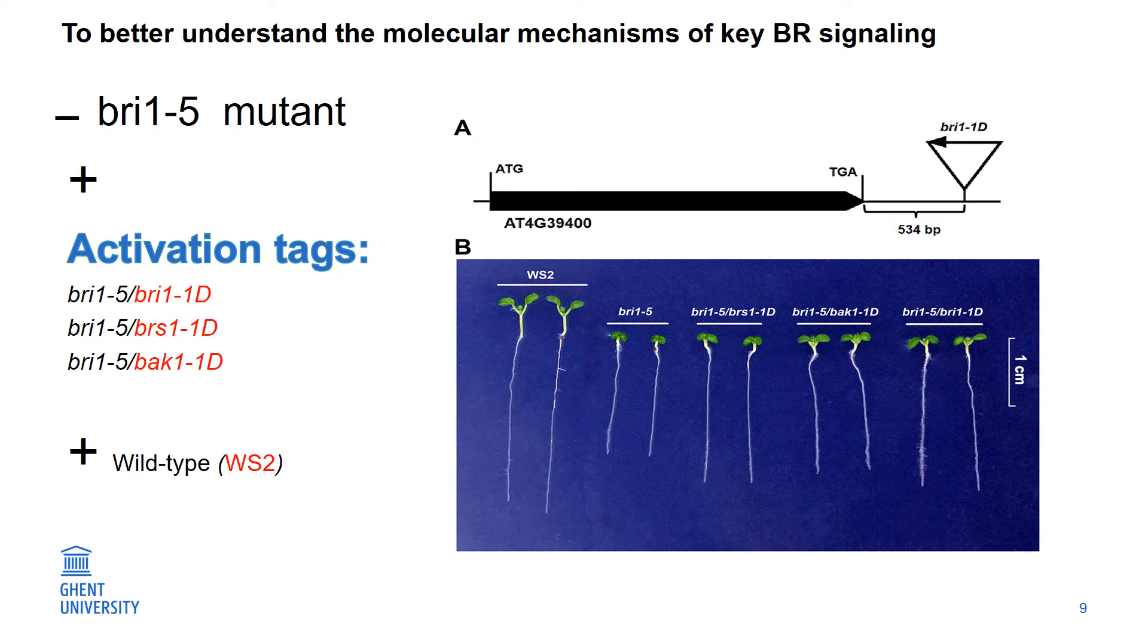As I said, to study the BR signaling, we use mutant lines. The first line is a line which has mutation in BRI1, which is the receptor of the BR signaling.